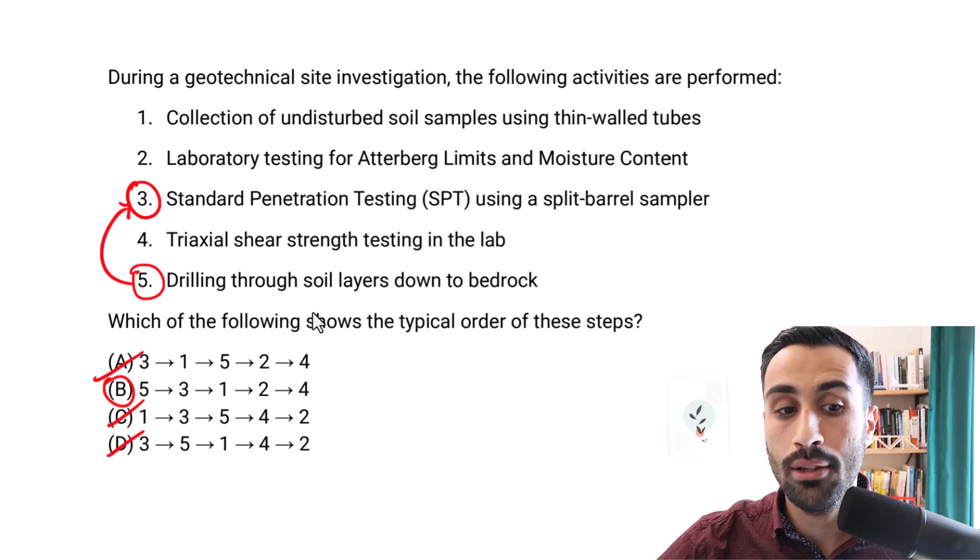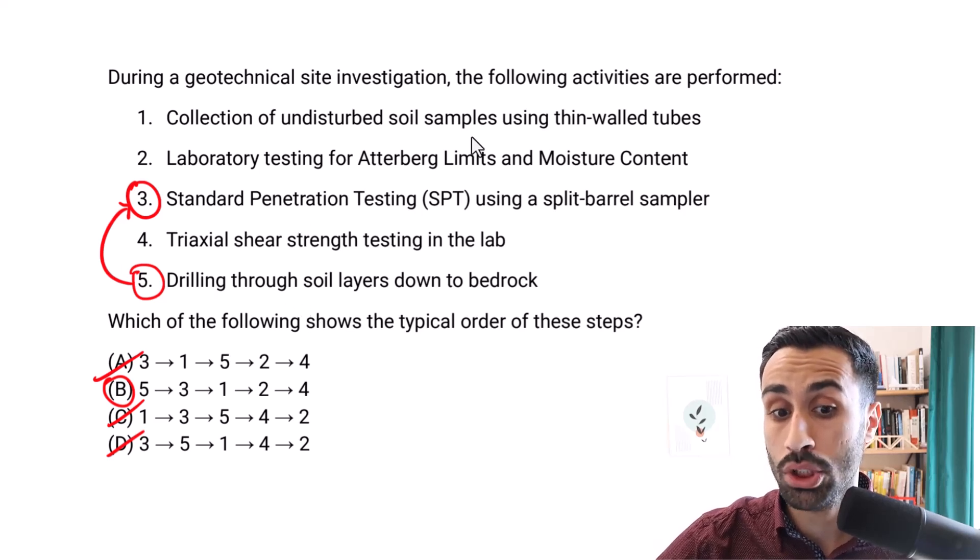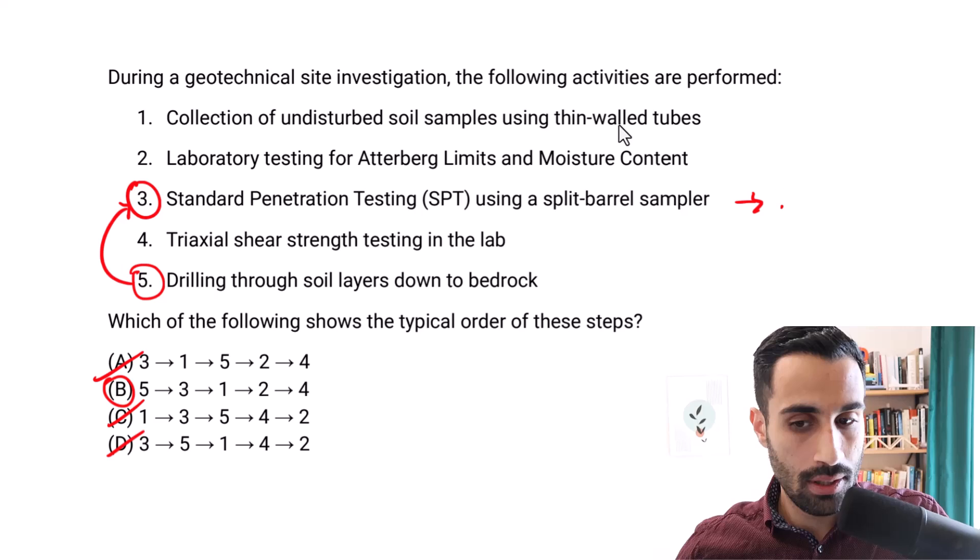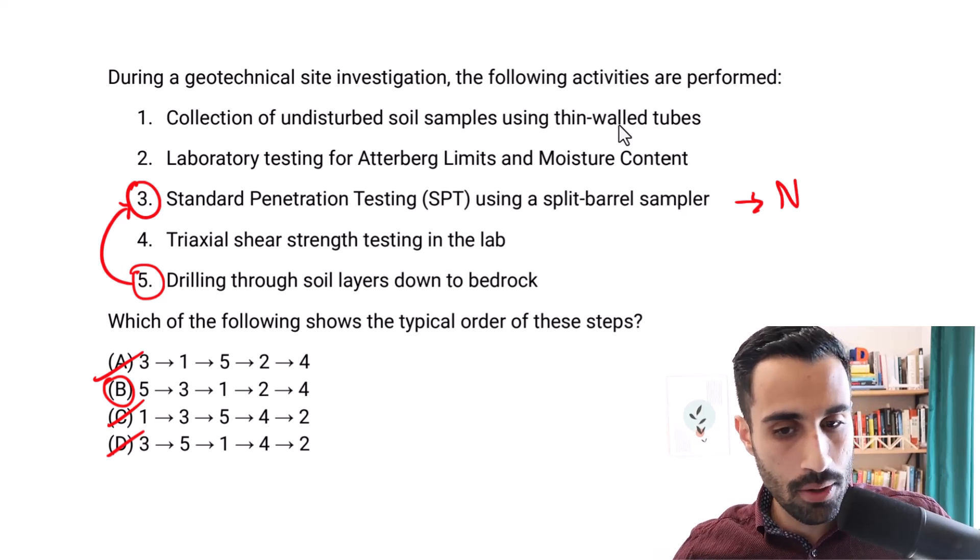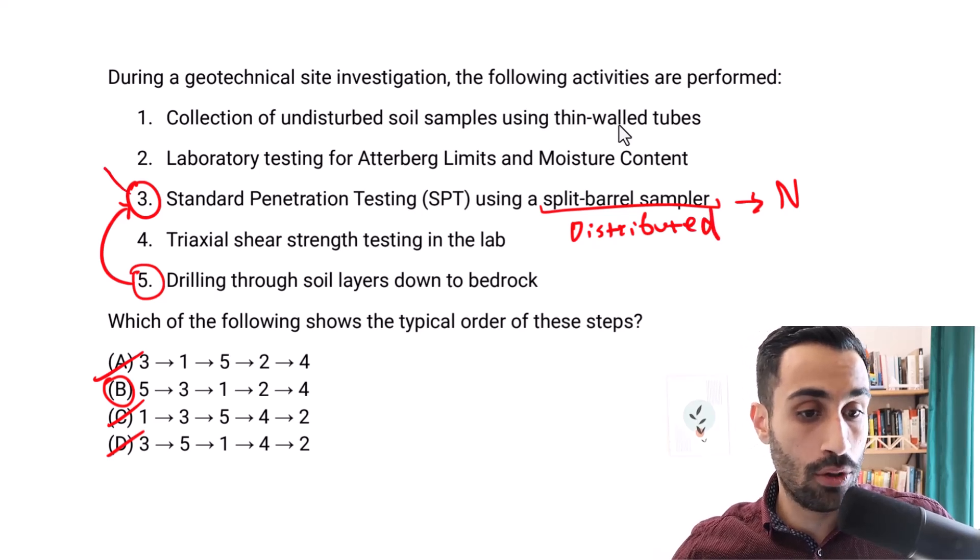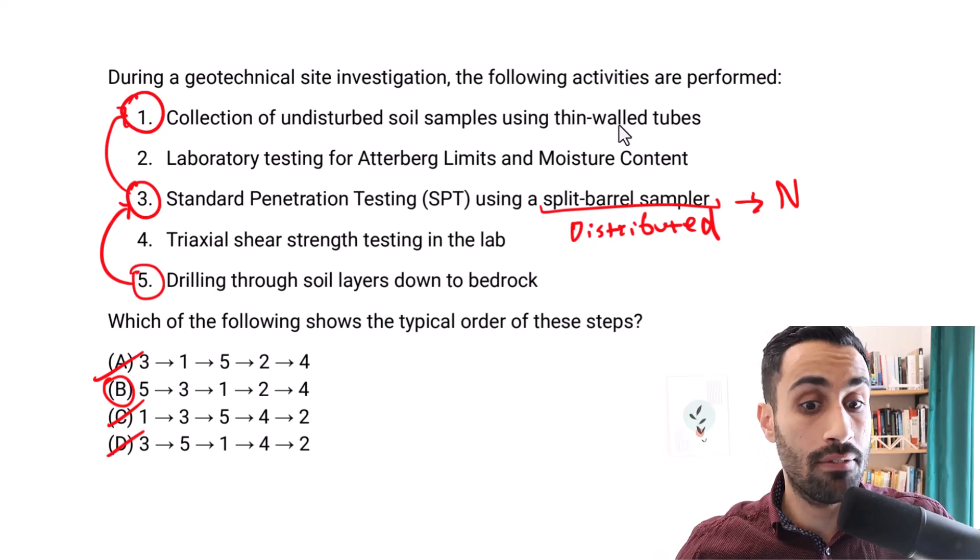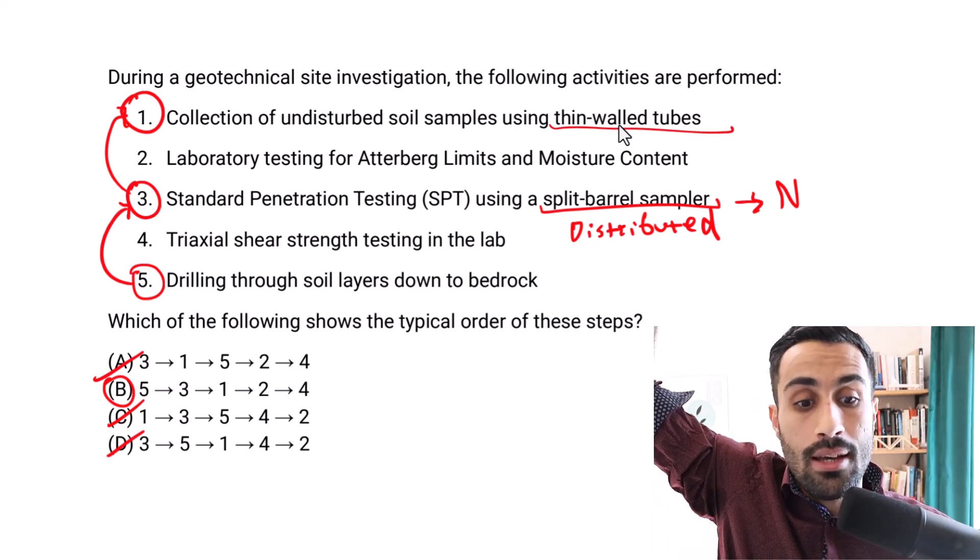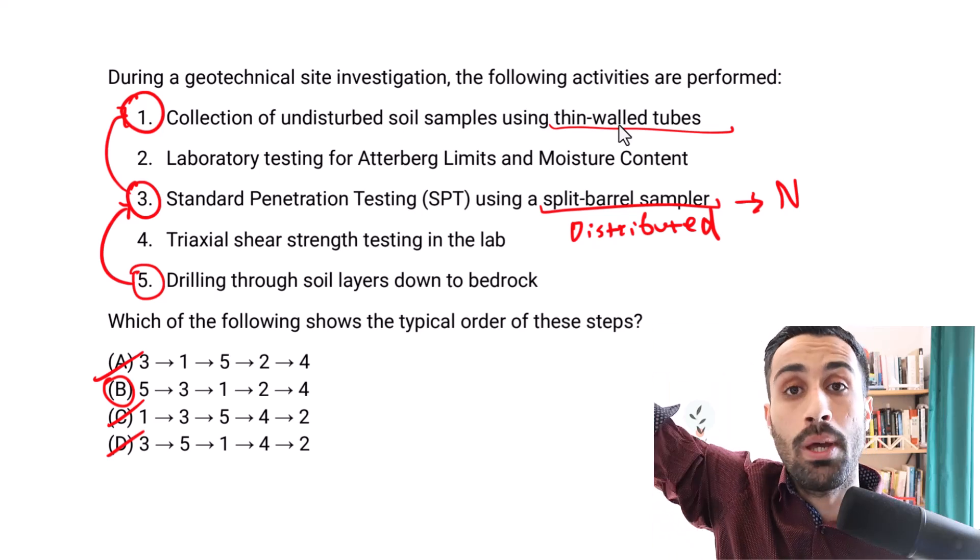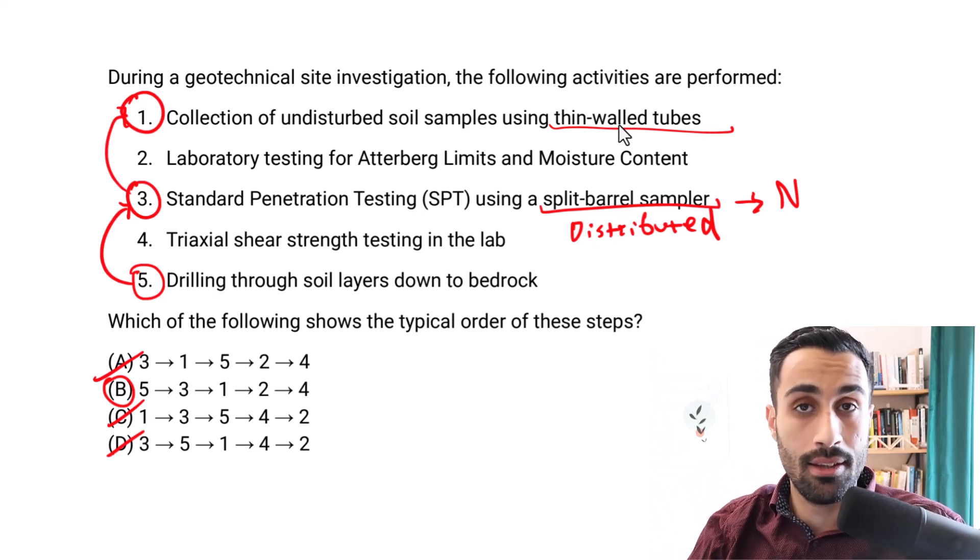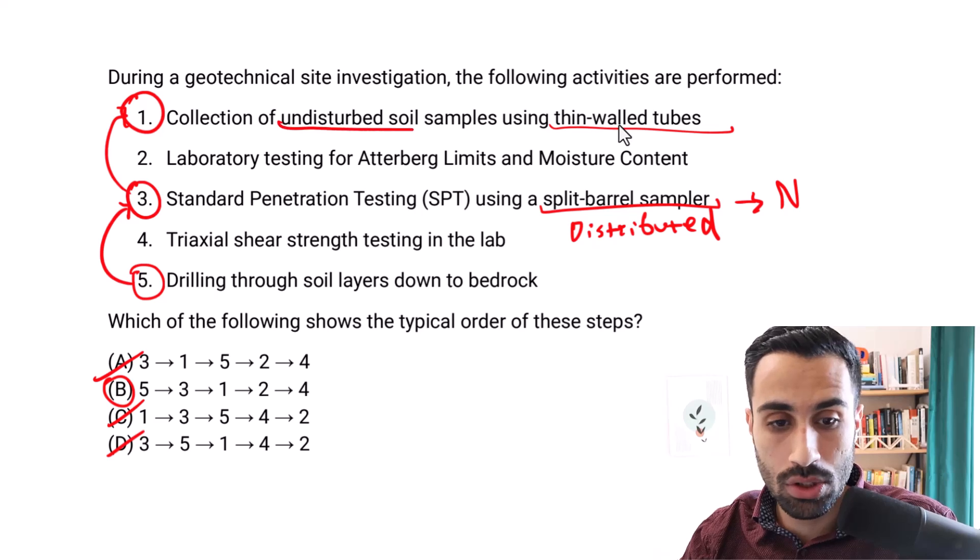Then from number three, what do we do after that? We're going to look at the collection of the undisturbed soil samples using the thin wall tubes. Keep in mind, the SPT gives us the N value and also the split barrel gives us disturbed samples. So we already got the disturbed samples. Now we go from three and go back to one here to get the collection of the undisturbed soil samples using the thin walled Shelby tube. So we do have to take out that split barrel, move it back up, replace it with a Shelby tube, then hydraulically go down and get a thin walled tube. And that thin walled tube, Shelby tube gives us the undisturbed soil samples.